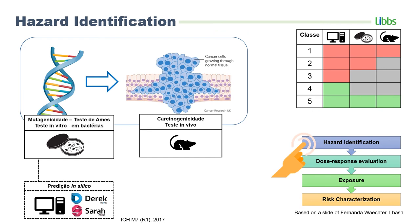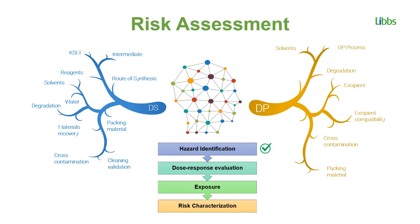That was the first step — evaluating if a nitrosamine can be formed, which one, and its mutagenicity class. The next step is the dose response evaluation. In this step, we should calculate the dose response according to the classification we got in the previous step. For instance, for class one compounds — known carcinogenic impurities — we should use the TDC. For impurities classified as class two or three, we should use the TDC for nitrosamines, which is 18 nanograms per day. For class four and five, we can use higher acceptable limits.